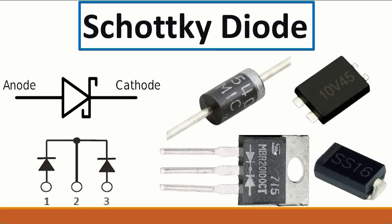The Schottky diode can be a two-terminal diode, three terminals, or even four terminals. This is the symbol — we have the anode and the cathode. It could also be three terminals, like this one with two diodes connected together at their cathode, as you can see here.